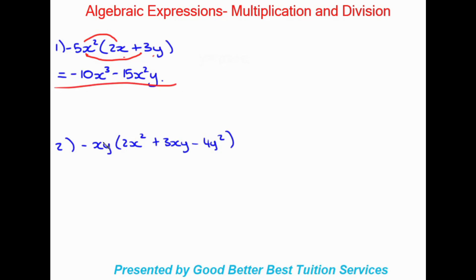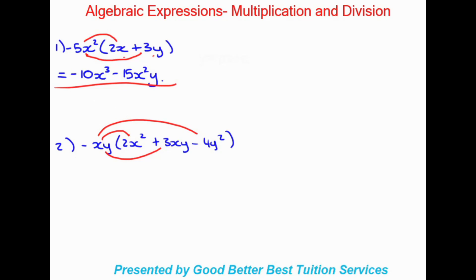Looking at the second example, we have a monomial timesing a trinomial. It's the same concept — this term is going to times into each of the three terms in the bracket: 1, 2, and then 3.